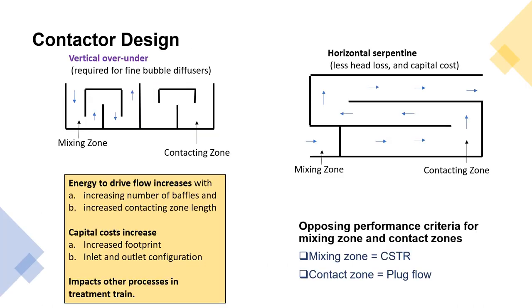The way we design contactors is vertical over-under which is required for fine bubble diffusers, or horizontal serpentine which are less head loss, less capital cost. We have a mixing zone where we want thorough mixing, rapid almost instantaneous mixing, and then we have a contact zone where we want near plug flow to get CT. Energy requirement can increase with increasing the number of baffles and increasing the contact zone length and also pumping against say 24 feet of water column versus 20 feet or 16 feet of water column. We have to consider a lot of things when we look at these designs.